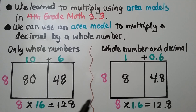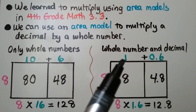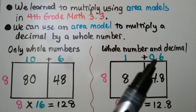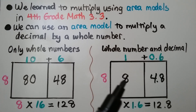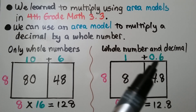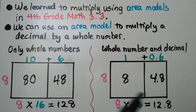We do the same thing for a whole number and a decimal. We have our factor 8 here. We're multiplying it by 1 and 6 tenths. We break apart the 1 and 6 tenths as a 1 here and a 6 tenths here. 8 times 1 is 8, and 8 times 6 tenths is 48 tenths that we can regroup to 4 and 8 tenths. We add them together and get 12 and 8 tenths.